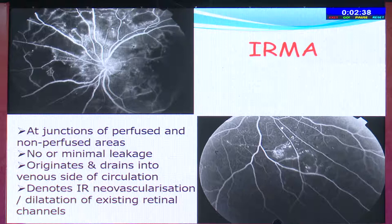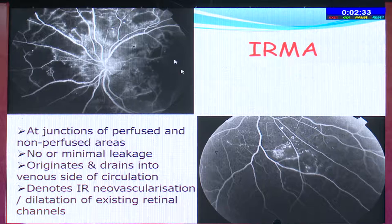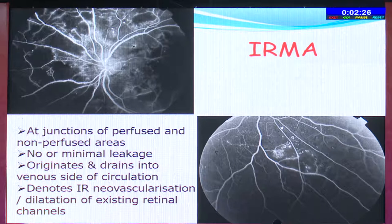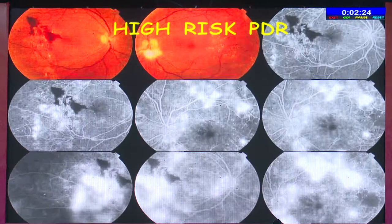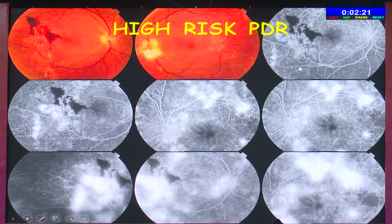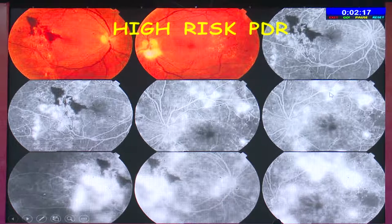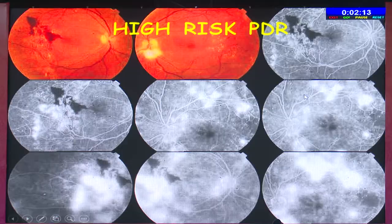IRMA can be confused with neovascularization, but neovascularization produces much heavier and more intense leakage compared to IRMA. In high-risk proliferative diabetic retinopathy, you get new vessels leaking profusely, either at the disc (NVD) or elsewhere (NVE).